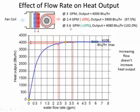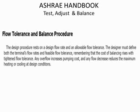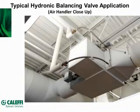On the positive side, increasing flow 20% above target to 3.6 GPM gives 4,080 BTUs per hour. So the effect of accuracy, if you're on the sweet part of the fan coil curve, is largely minimized whether you're doing fixed or variable flow type systems. The ASHRAE Handbook on Test, Adjustment, and Balance emphasizes this, noting that the cost of balancing rises with tightened flow tolerance. They also reference that overflow causes increased pumping costs, and insufficient flow reduces optimum heating and cooling, since you're on the rapidly changing part of the flow curve.